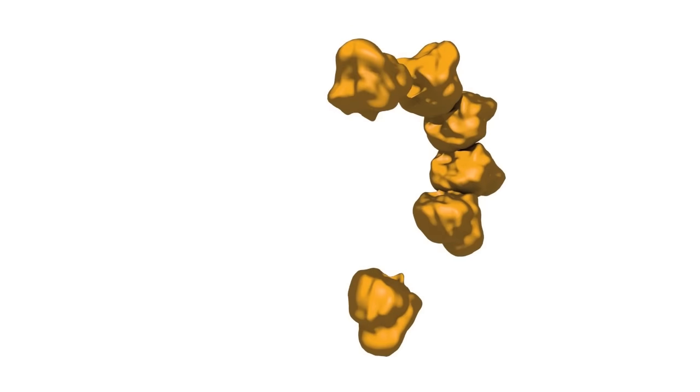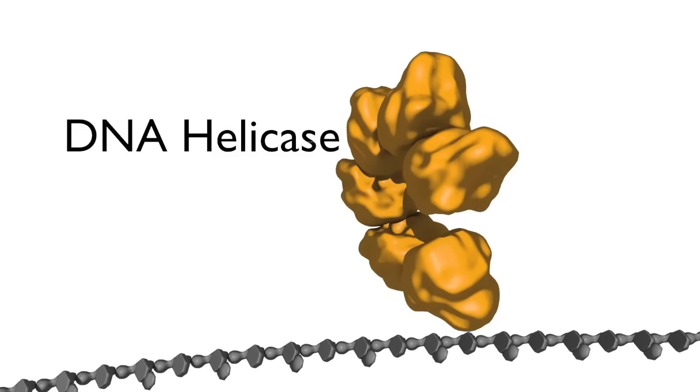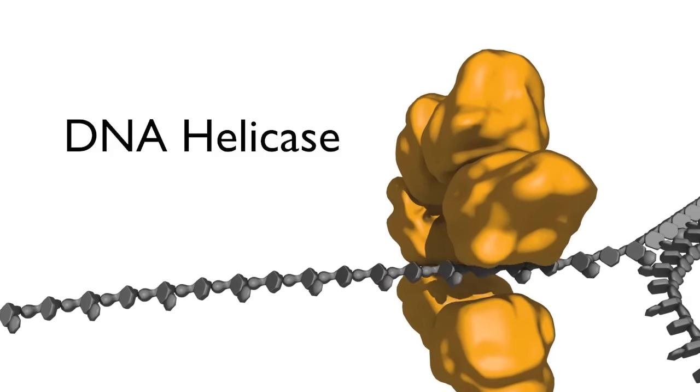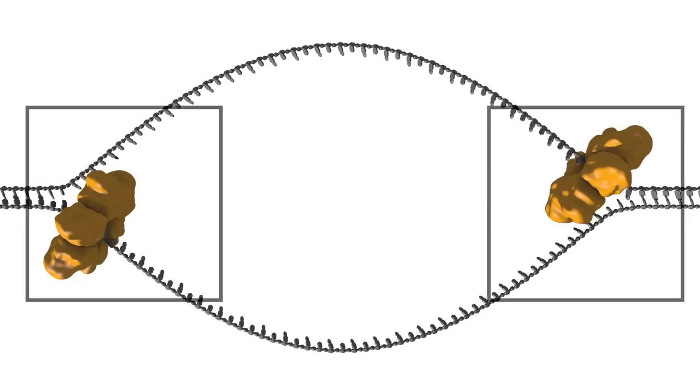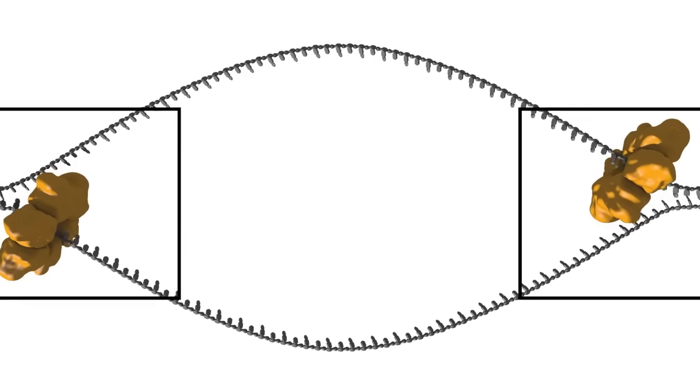Once open, a DNA helicase, a ring of six subunits, is loaded onto one strand of the DNA at each side of the replication bubble. This establishes two replication forks that will move away from each other as replication proceeds.